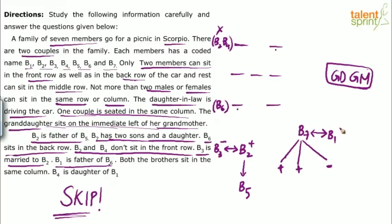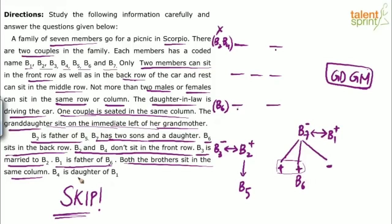B1 is male, B7 is female. B1 is the father of B6, so one of B7's sons is B6. Both brothers sit in the same column — the only two brothers in the family come from B1 and B7's sons. The last point says B4 is the daughter of B1, so B4 is the female child of B1 and B7.